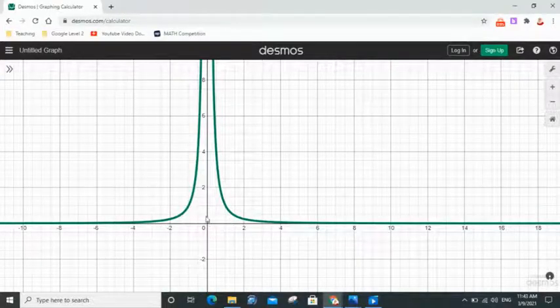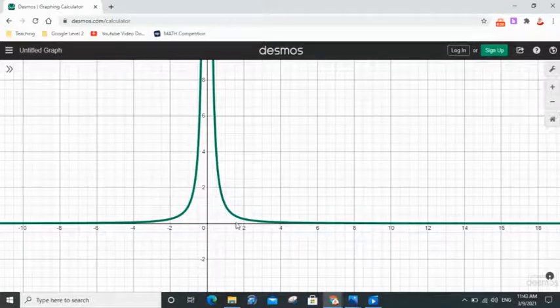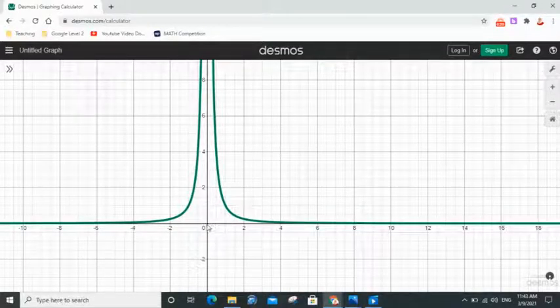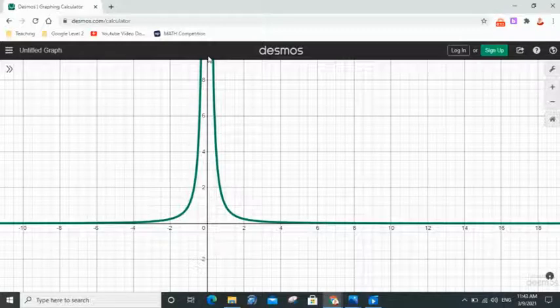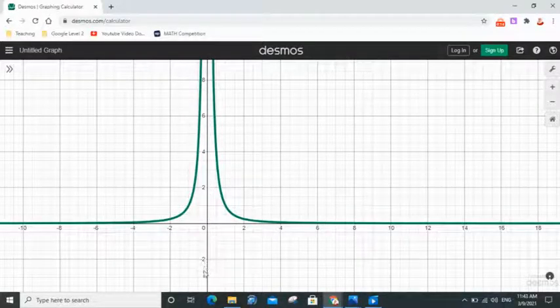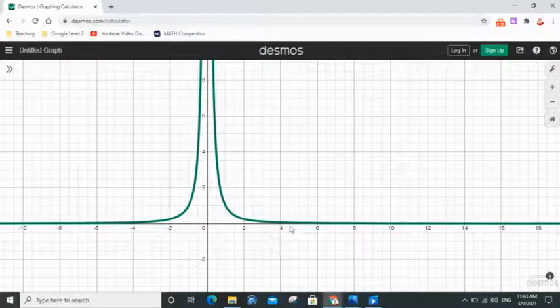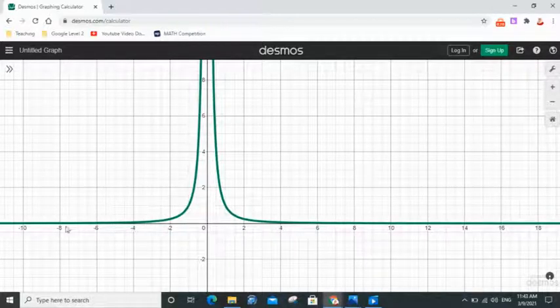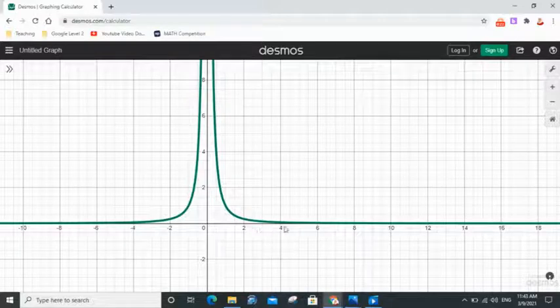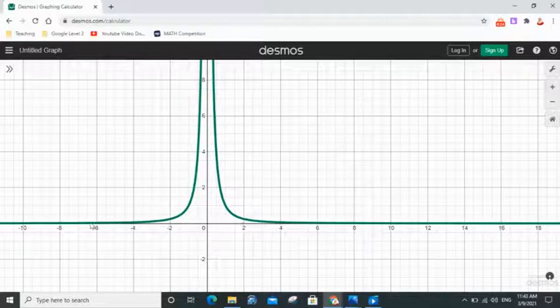The function f(x) = 1/x² still has a vertical asymptote at x = 0 because we can't have a zero denominator, and it still has a horizontal asymptote at y = 0 because as x approaches plus or minus infinity,